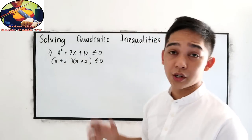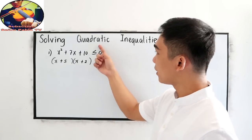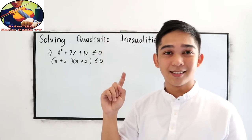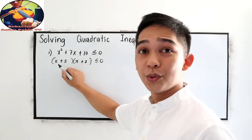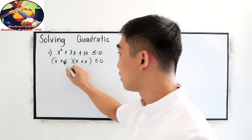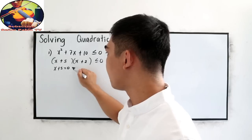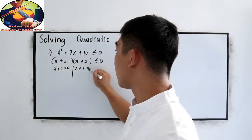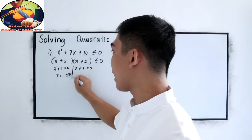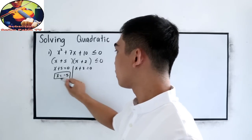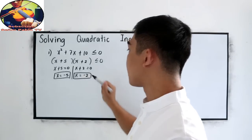After getting the factors, find the zeros of our quadratic inequality. Our zeros: just equate each factor to 0. So x plus 5 equals 0 gives x equals negative 5, and x plus 2 equals 0 gives x equals negative 2. These will be our zeros.